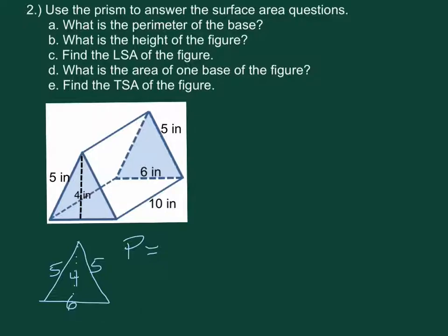So the perimeter of the base is 5 plus 6 plus 5, you can see that right here, 5 plus 6 plus 5. So our perimeter is 16 inches. The next piece we need to recognize is our height of our prism, which is the distance between the bases, so it's the distance between the two triangles. So our height is 10 inches.